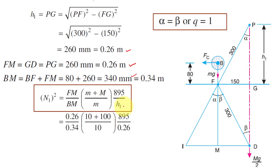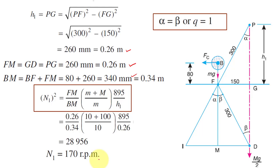The formula to calculate the speed when Q equals 1 is: N1² = (Fm / Pm) × ((m + M) / m) × (895 / H1). Substituting: Fm = 0.26, Pm = 0.34, small m = 10 kg, capital M = 100 kg, H1 = 0.26 m. After substitution, N1 = 170 RPM. This is the minimum speed of the given governor.